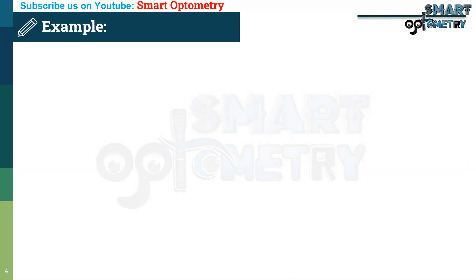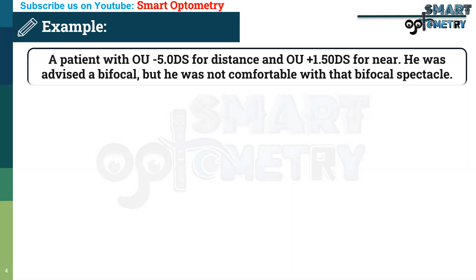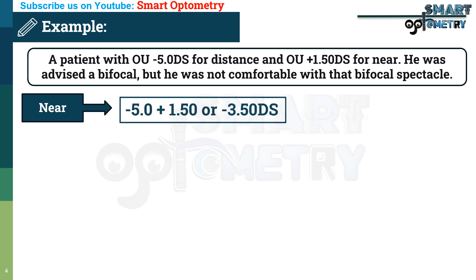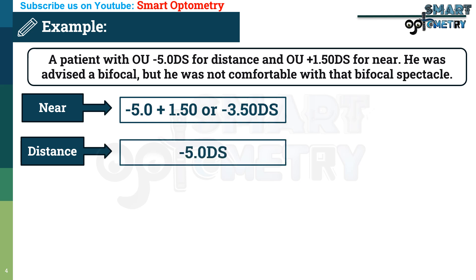Let's take an example. A patient with both eyes −5.00 diopters spherical myopia for distance and both eyes requiring +1.50 diopters for near. He was advised a bifocal but was not comfortable with it. If we separate near and distance power, then at near the patient will need −5.00 + 1.50 = −3.50 diopters spherical, and at distance he will need −5.00 diopters spherical.